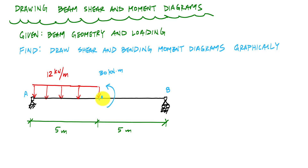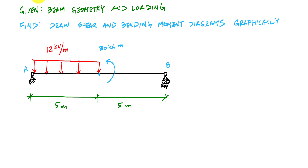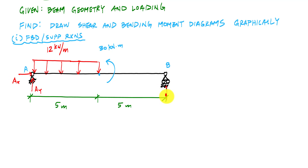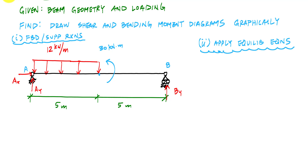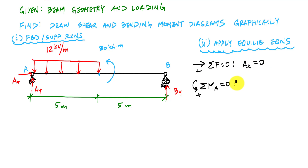The first thing we want to do is determine the support reactions, and that will require us drawing a free body diagram. At a pin support I've got a vertical support — I'll call that AY — a horizontal AX, and a vertical support here, BY. I'll go ahead and apply the equilibrium equations to get the support reactions. Summing forces in the horizontal tells me that AX is 0.